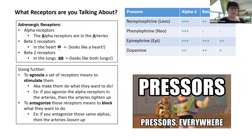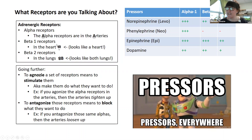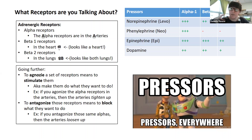When talking about vasopressors, it helps to understand the receptors. There are three major adrenergic receptors: alpha receptors live in your arteries — 'AA' is an easy way to remember it. Beta-1 receptors live in the heart — if you turn the B on its side it looks like the top of a heart. Beta-2 receptors live in the lungs — two Bs kind of looks like a lung. When you stimulate alpha receptors, the arteries tighten. Beta-1 stimulation supports the heart with increased chronotropy and inotropy. Beta-2 receptors in the lungs support lung function.